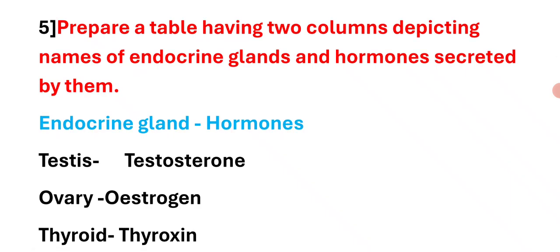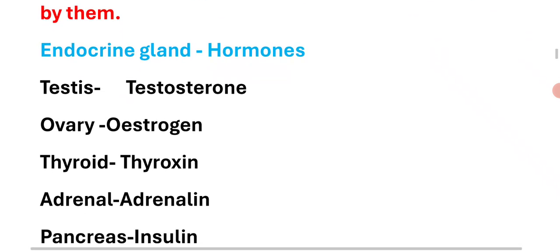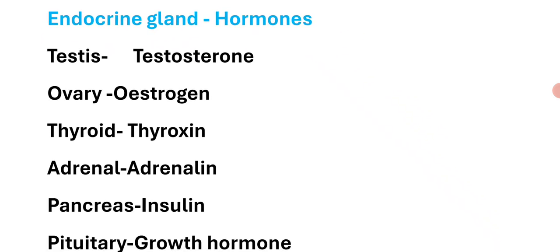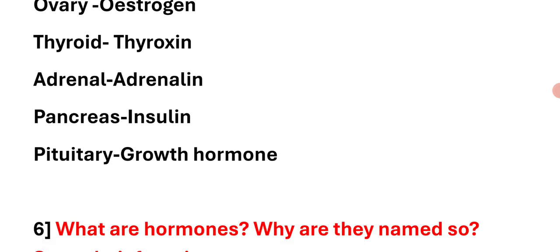Question number five: Prepare a table depicting names of endocrine glands and hormones secreted by them. Testes gland secretes testosterone. Ovary gland secretes estrogen. Thyroid gland secretes thyroxine. Adrenal gland secretes adrenaline. Pancreas secretes insulin. Pituitary gland secretes growth hormone.